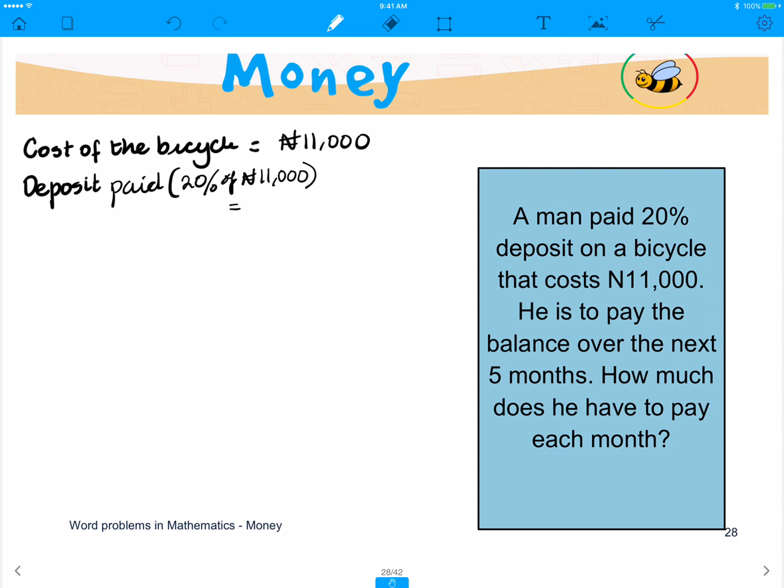That should give us 20 over 100 times 11,000. And if you take away all the necessary zeros, you are left with 2,200 Naira.